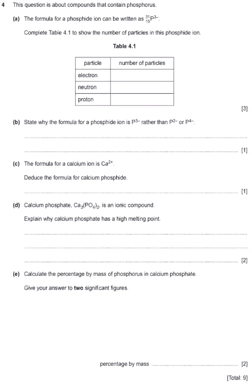The question says: complete table 4.1 to show the number of particles in this phosphide ion. For an element to become an ion, it has gained or lost electrons. We have three particles: electrons, neutrons, and protons. Since this is a phosphide ion, which means it has gained three electrons, it is called a phosphide ion.